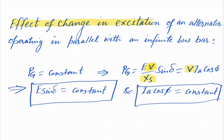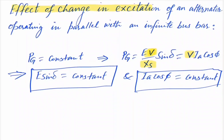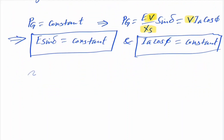For our case, where the active power output of the alternator is fixed and we are studying the effect of change in excitation: by changing the field current If, E will be changed in such a way that E·sinδ remains constant. Similarly, by changing If, Ia will change as well as cos φ will also change, but they will change in such a way that Ia·cosφ remains constant.